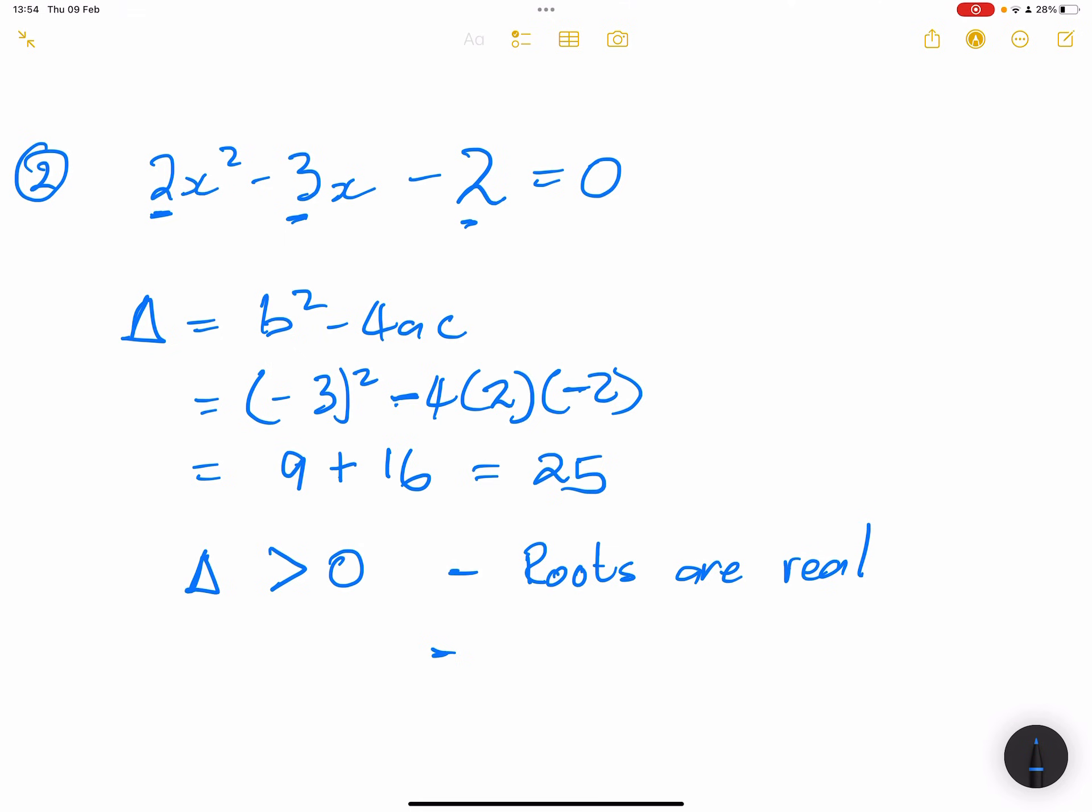But what do we note? We also note that delta is a perfect square, so roots are rational. They're rational because 25 is a perfect square.